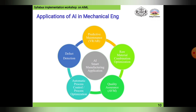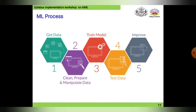Hopefully you understand how these are correlated to each other. Coming to the next slide: the machine learning process. The machine learning process will start from the basics. The first stage in the machine learning process is to get data.